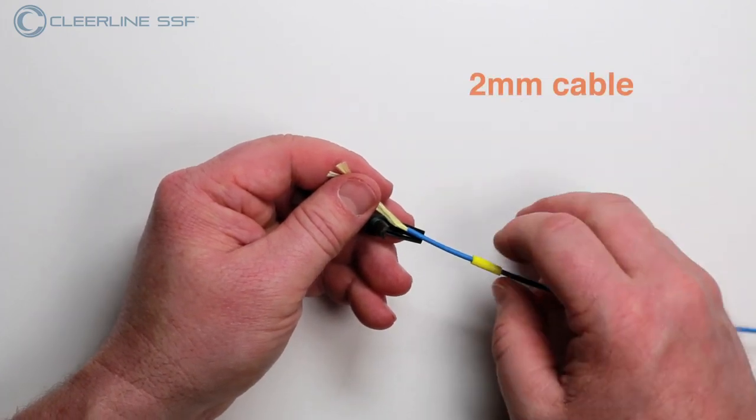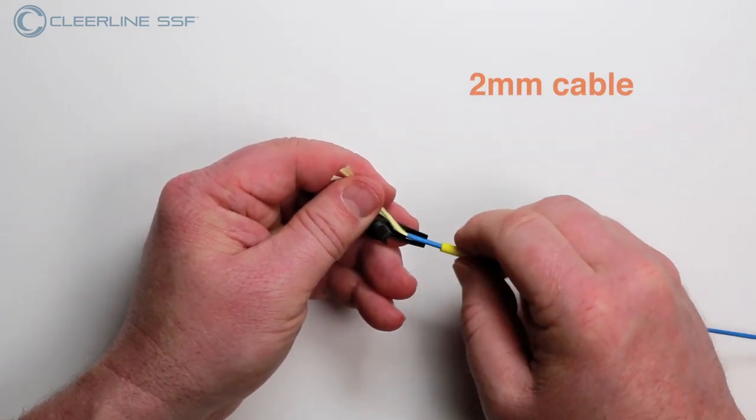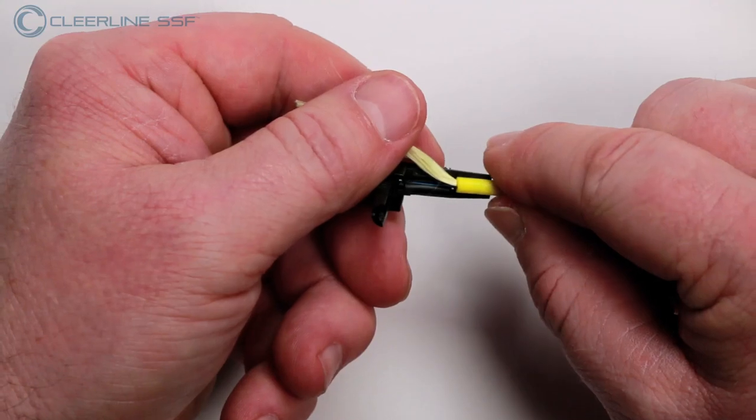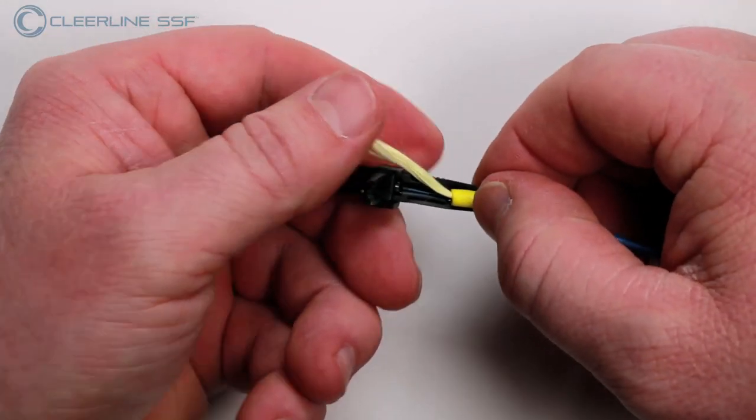For 2 mm cable, slide the previously installed 2 mm build tube forward and seat in the rear of the connector.